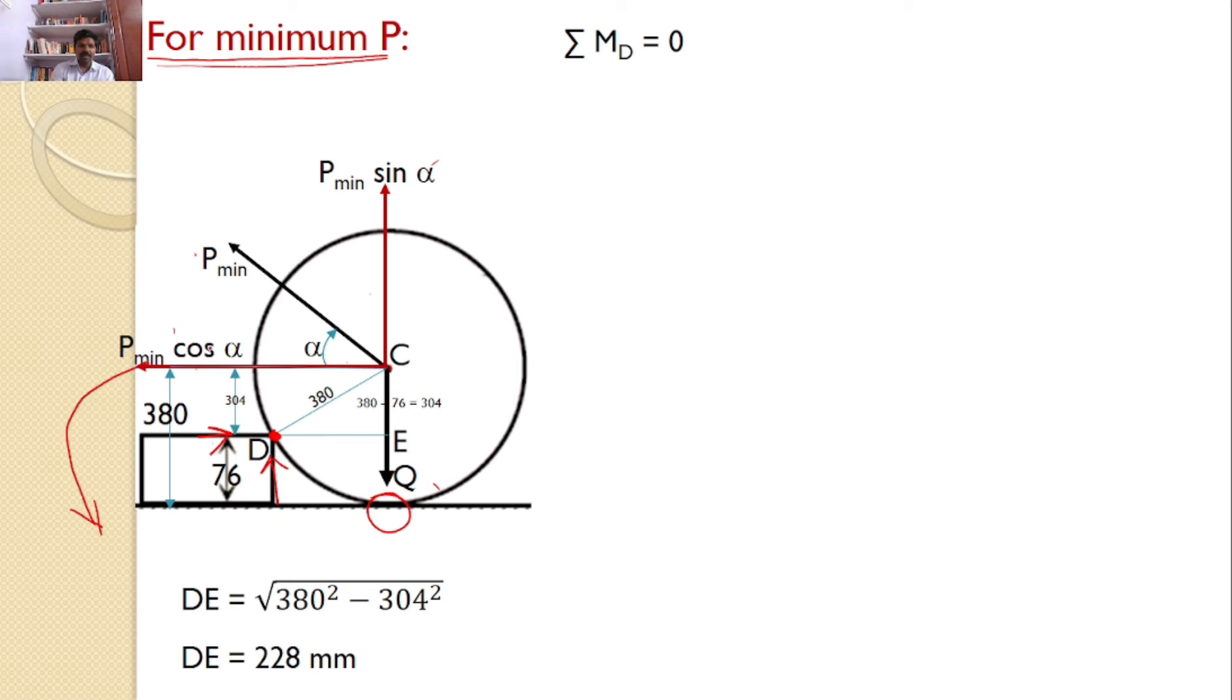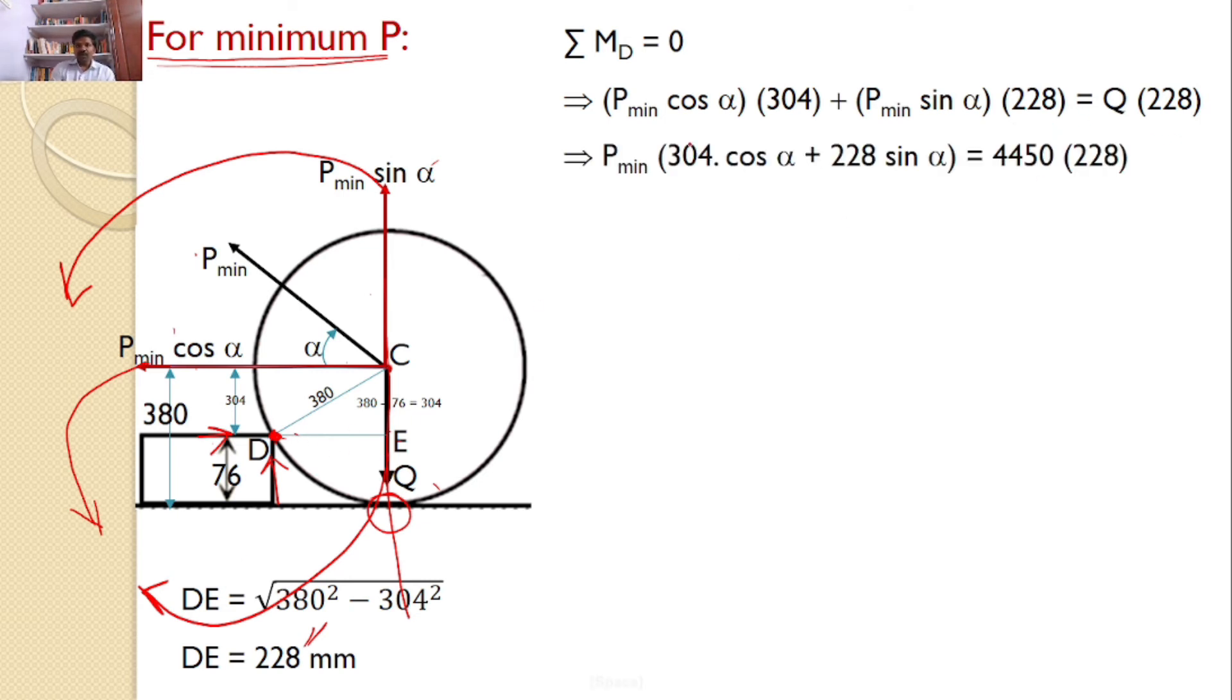P minimum cos alpha will introduce a moment in this direction. P minimum sin alpha will introduce a moment in this direction. Q will introduce a moment in this direction. Hence I can say P minimum cos alpha into the distance is 304. P minimum sin alpha into the line of action, and the distance is DE, we already calculated as 228 mm. Hence P minimum sin alpha into 228 is equal to Q into the same distance 228.